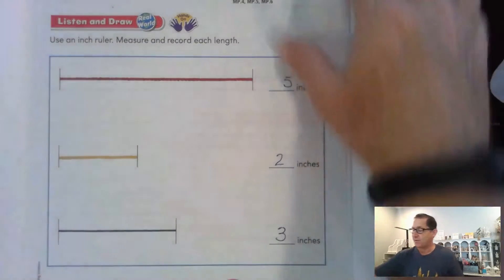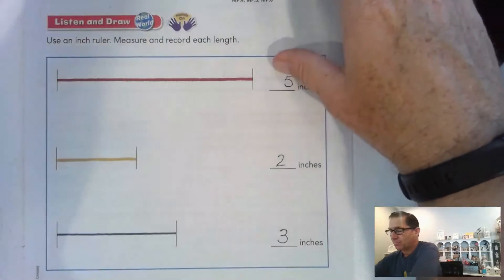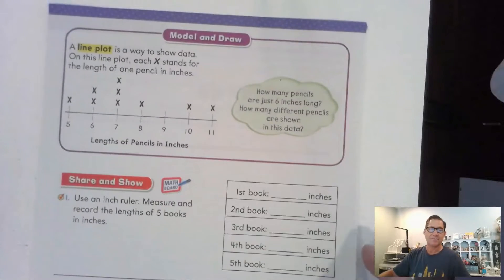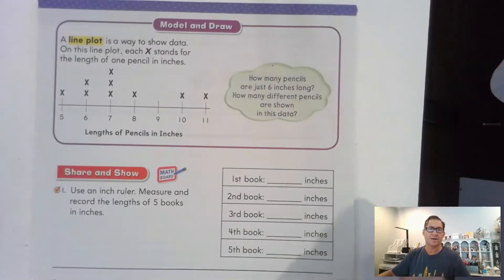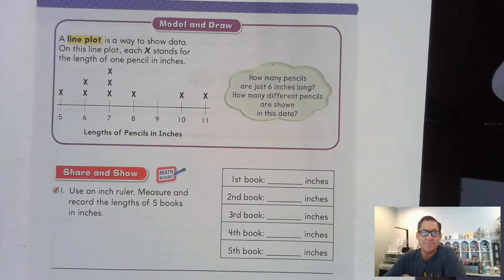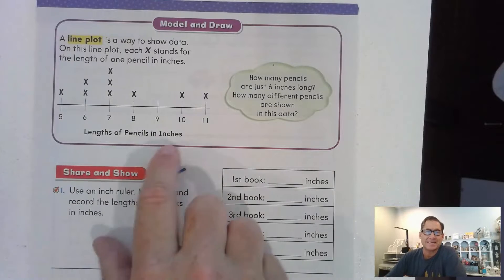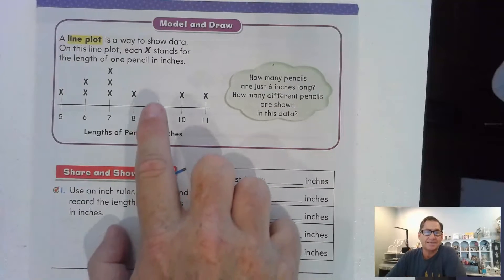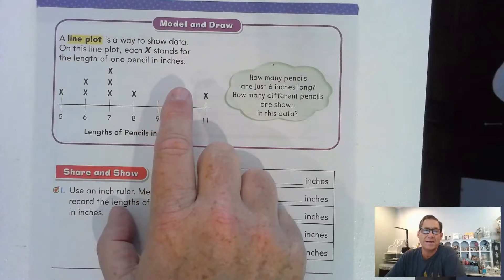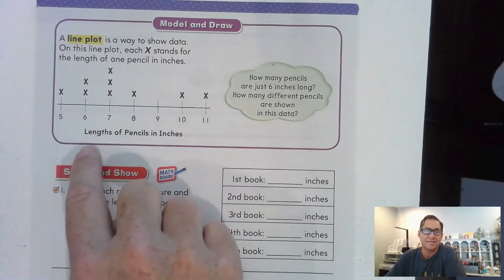This next one's in between, probably three, maybe four inches — I'll call that three inches. Now we're going to apply the concept of measuring things to create a line plot. A line plot is a way to show data. On this line plot, each X stands for the length of one pencil in inches.